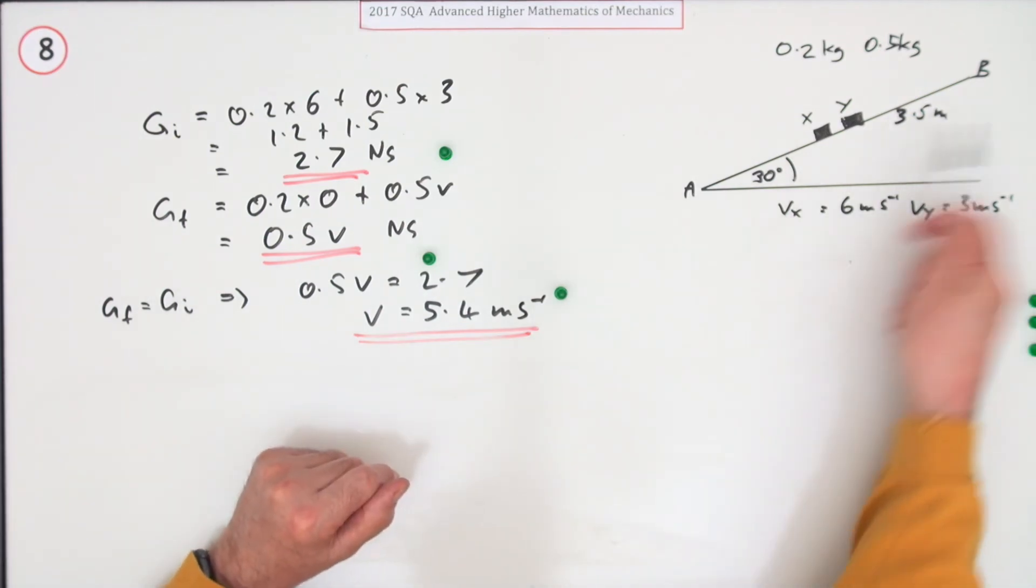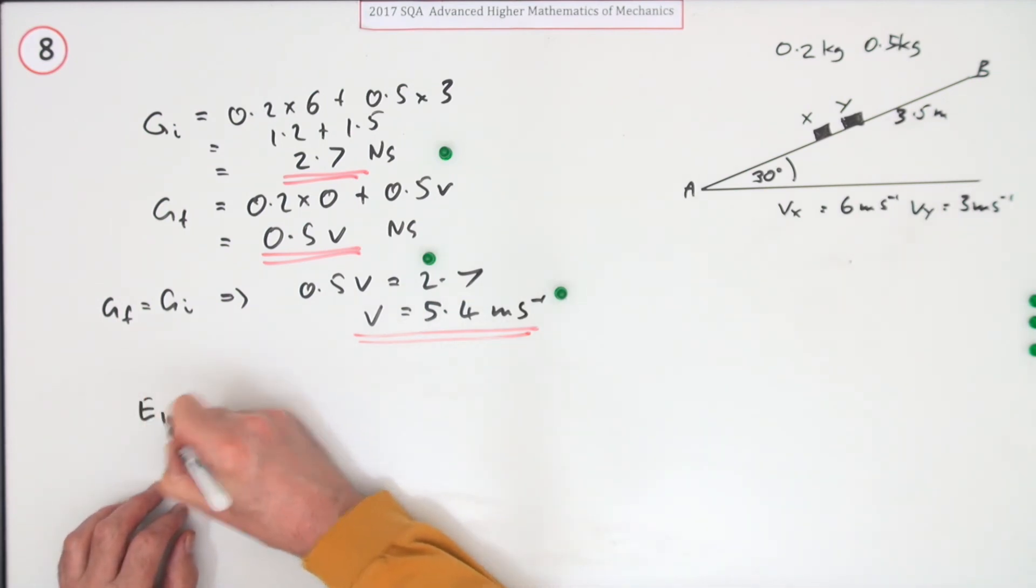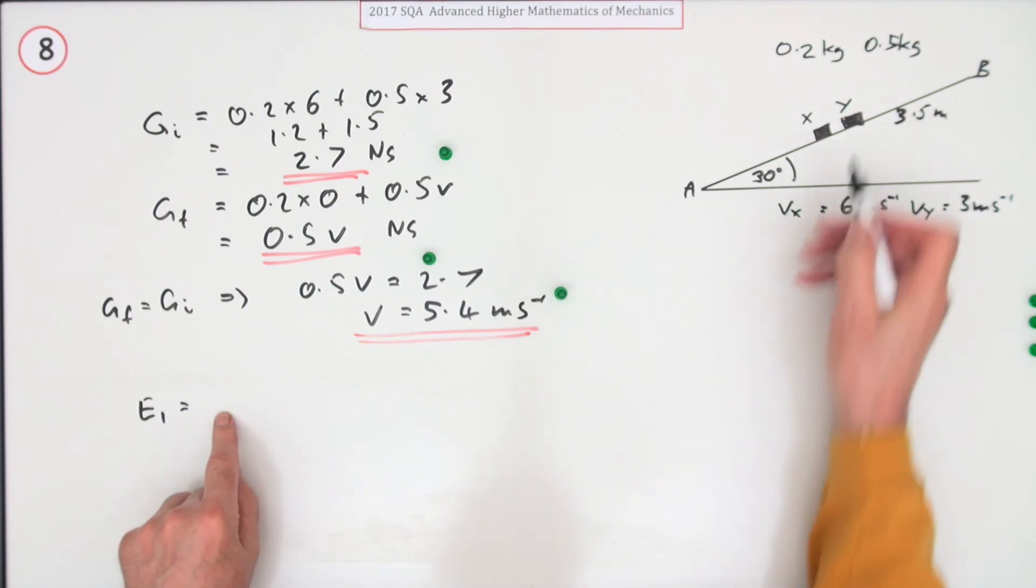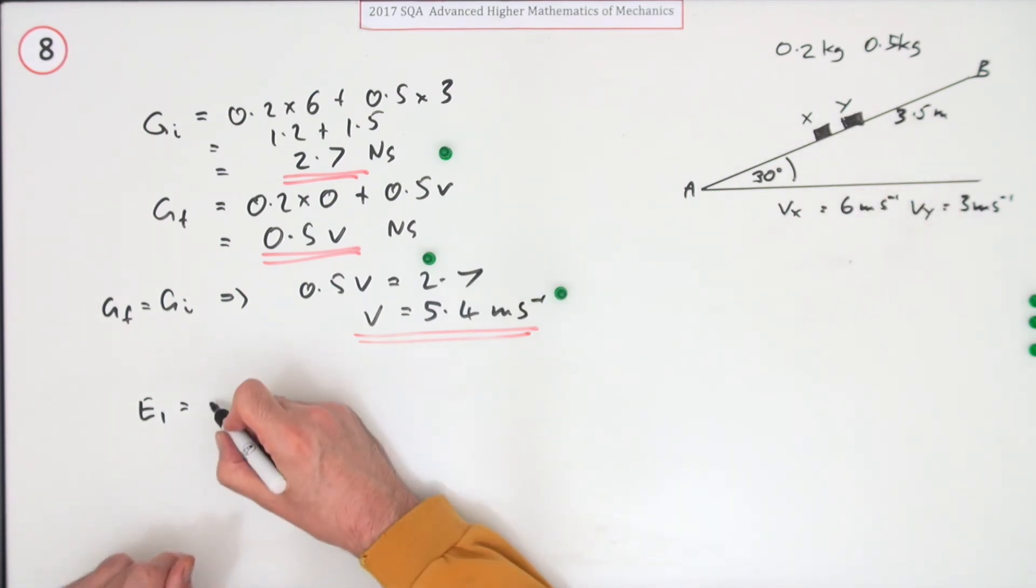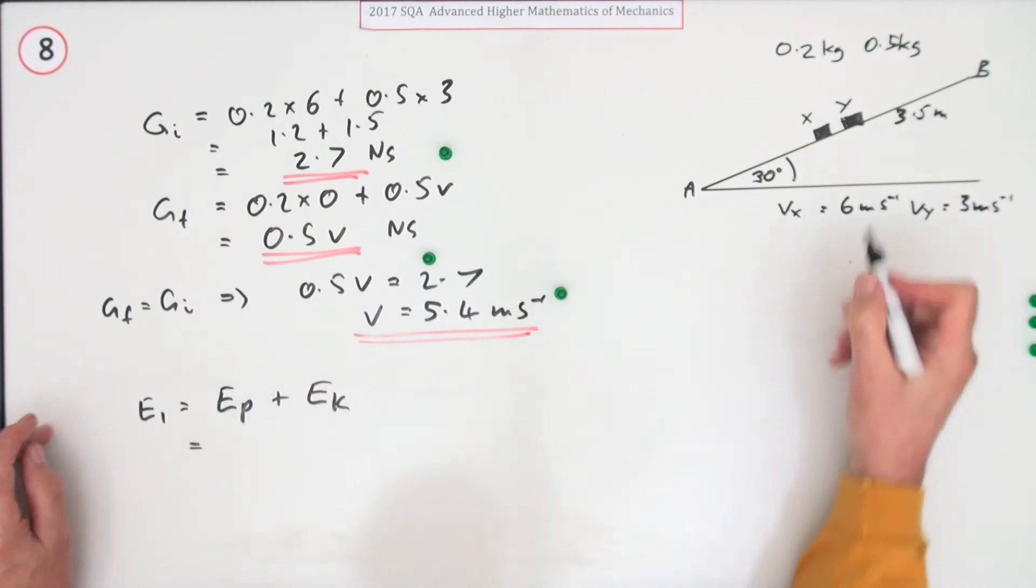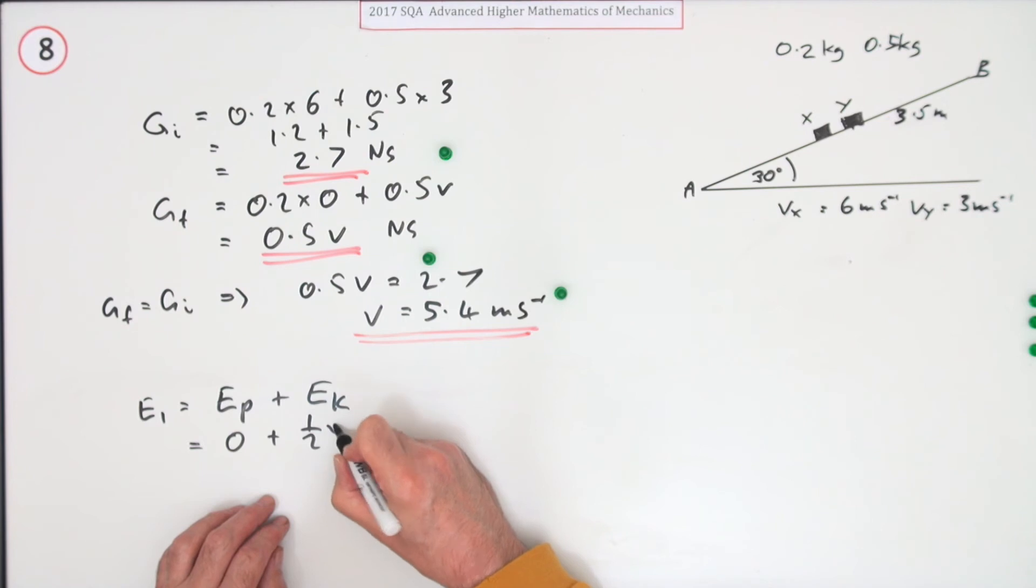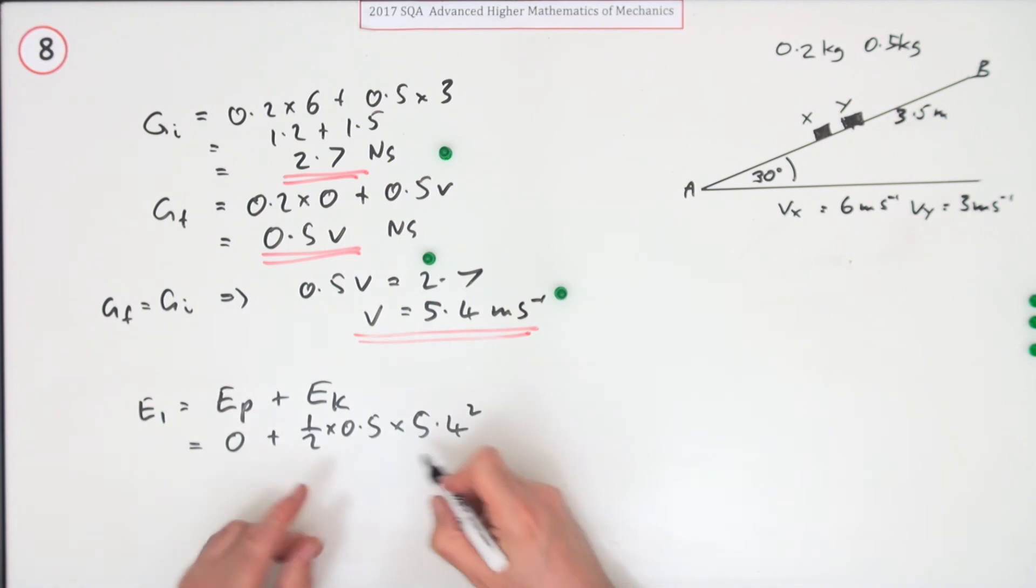Or you could use the conservation of energy. Because there's no work done against friction in this case. And say this. Well, E1 is going to be made up of the two parts for Y. That's going to be the potential energy and the kinetic energy. Now, taking that point as the datum, that will be 0. The kinetic energy will be a half of mv squared. So that's a half of 0.5 times 5.4 squared. You could carry all that through. Maybe I'll just work it out. So that's 7.29 joules.